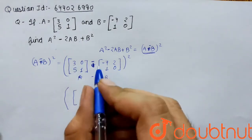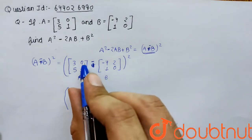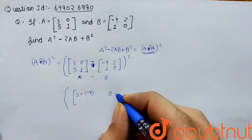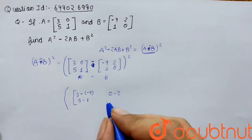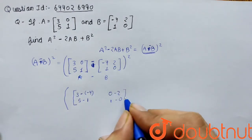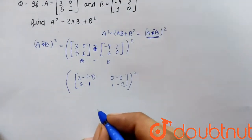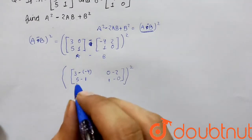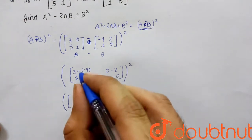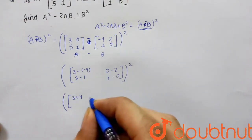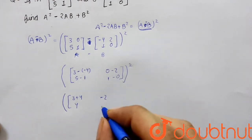Now we subtract: 3 minus (-4) gives 3 plus 4. Then 0 minus 2, then 5 minus 1, and 1 minus 0. So this gives us 7, 4, -2, and 1, whole square.